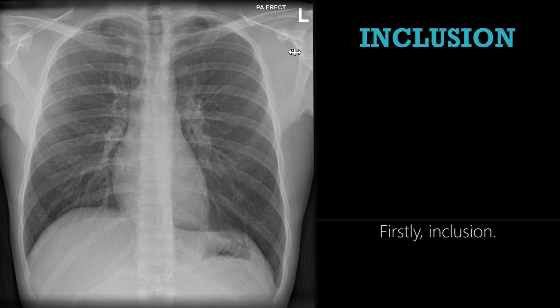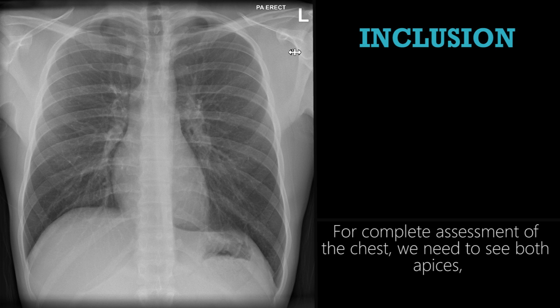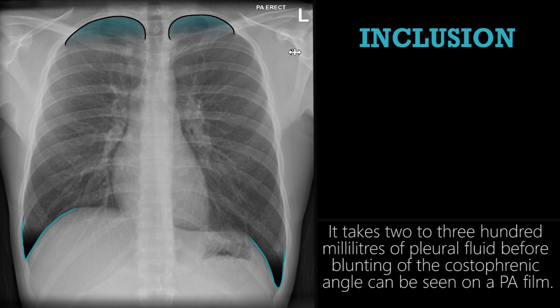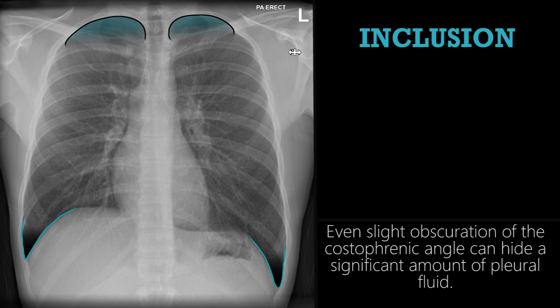Firstly, inclusion. For complete assessment of the chest, we need to see both apices and both costophrenic angles. It takes two to three hundred milliliters of pleural fluid before blunting of the costophrenic angle can be seen on a PA film. Even slight obscuration of the costophrenic angle can hide a significant amount of pleural fluid.